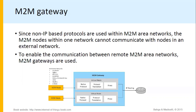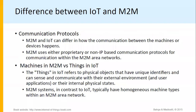Welcome back. We have seen the M2M gateway, which enables communication between remote machine-to-machine area networks. Now we'll see the difference between IoT and M2M. M2M and IoT can differ in how the communication between the machines or devices happens. M2M uses either proprietary or non-IP based communication protocols for communication within the M2M area networks.